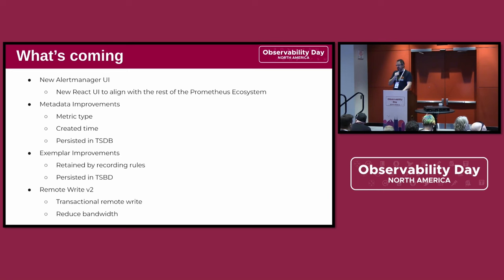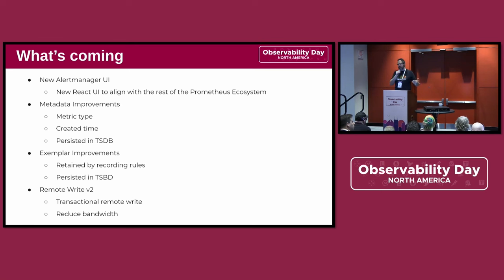The created timestamp will be redone as metadata, because underscore_created is nice and quite useful for a few use cases. But in the worst case, it doubles your metric cardinality, and that's not awesome. So we are putting this into metadata, and it's actually going to be persisted in the TSDB. So it's not the case anymore that you have all of this in RAM and once you restart your instance, it's gone. Some backends already could do this, but now Prometheus will be able to do this too.